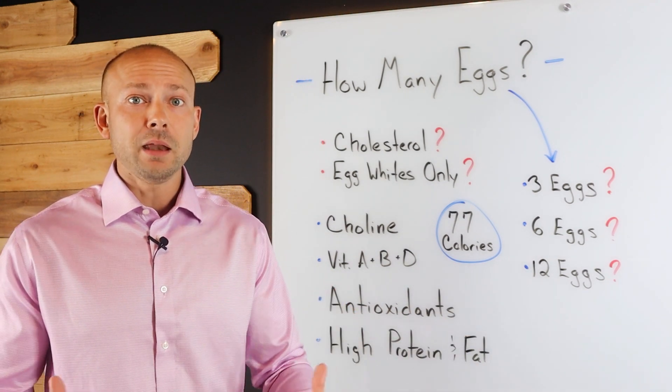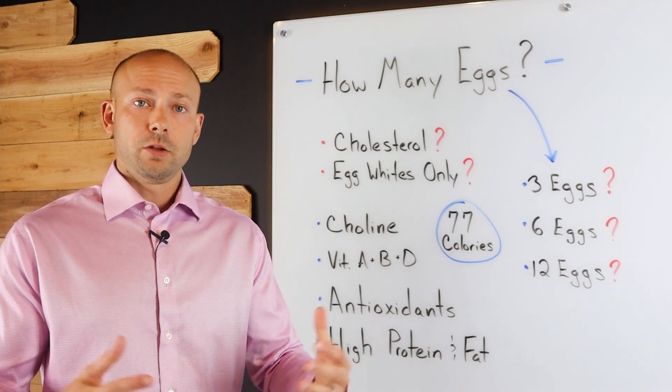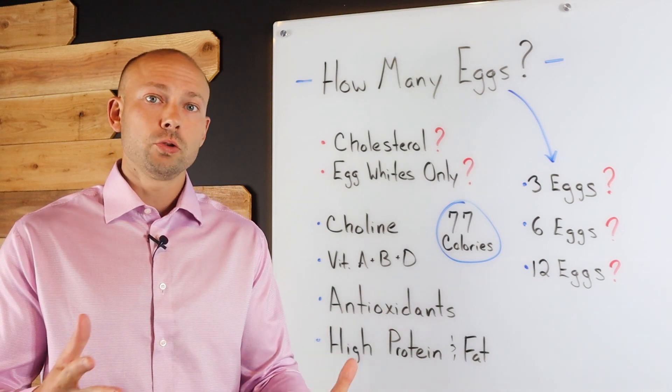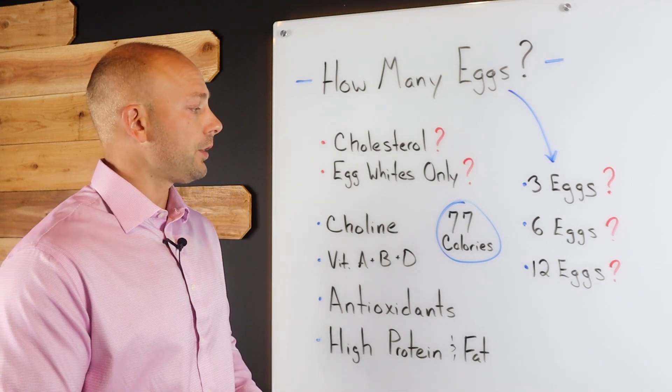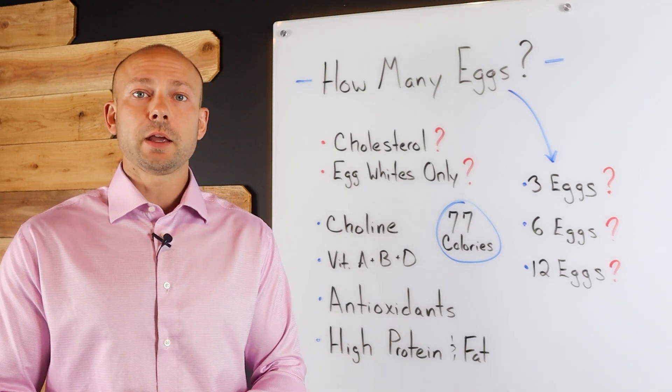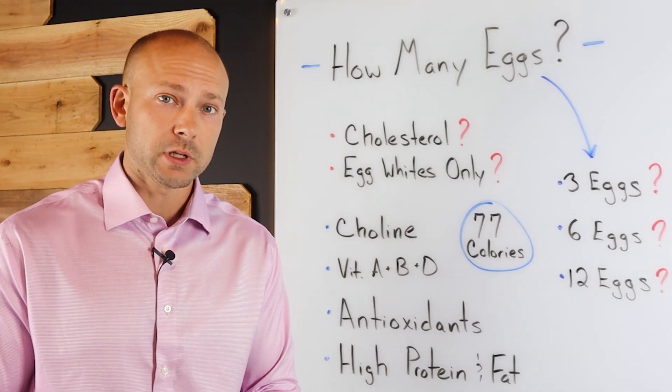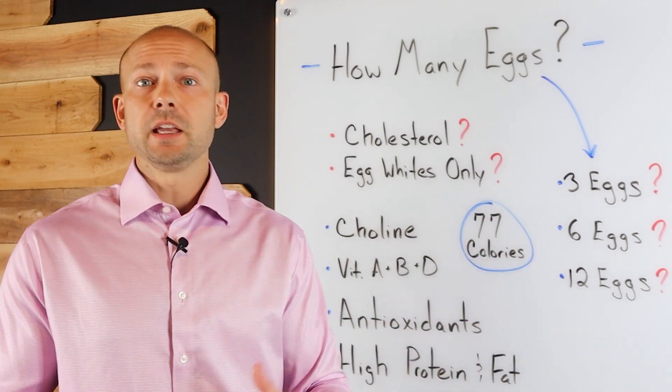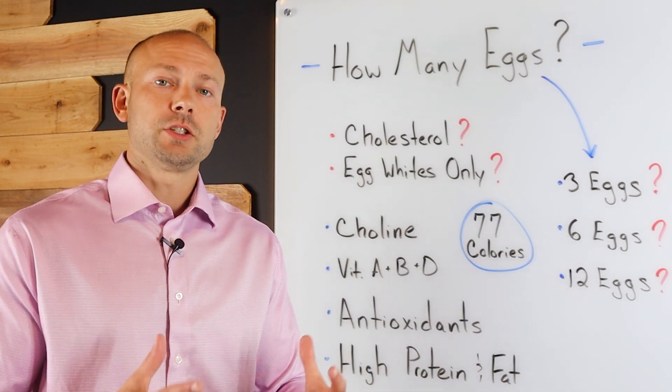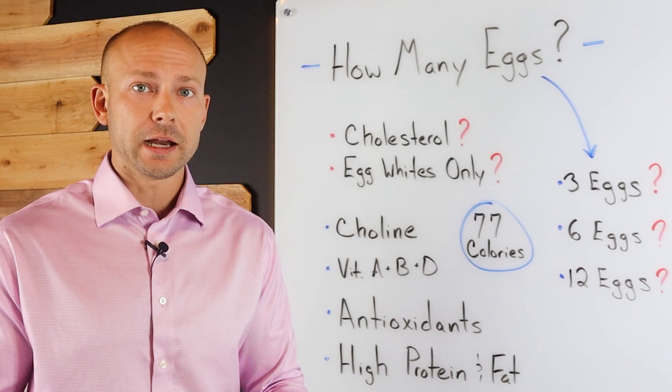But if you're eating 12 eggs, it's about 924 calories. And if, once again, if this is going to be your main meal of the day and you're right around 2,000, 1,800, 2,000 calorie diet, well, then you can still fit that in. You can make it work. So when we look at the average person's lifestyle between three and six eggs is going to be the more ideal situation.